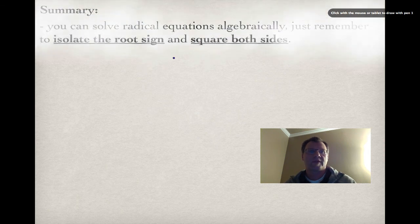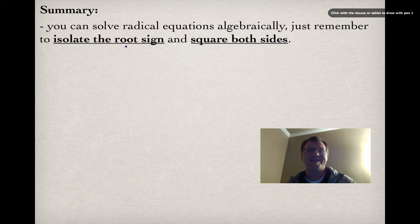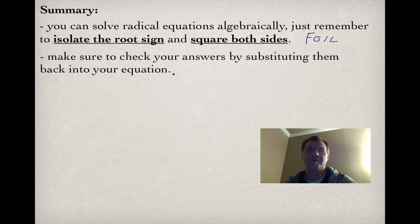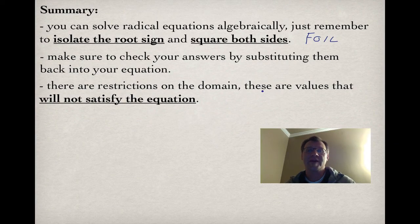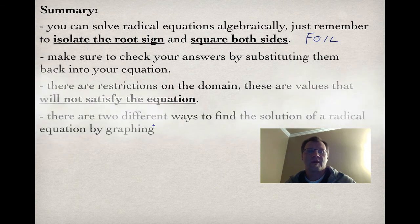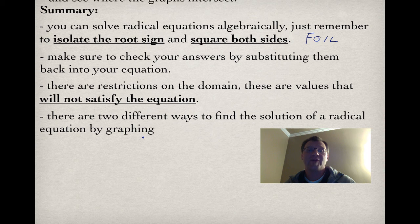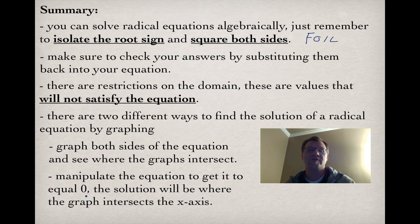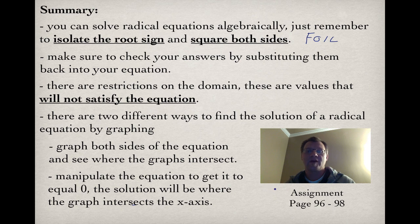In summary: you can solve radical equations algebraically by isolating the root sign and squaring both sides — if it's a binomial, remember to use FOIL. Always check your answers by substituting back into the original equation. Domain restrictions are values that produce a negative under the root sign, which we can't evaluate. There are two graphical methods: graph both sides and find the intersection, or move everything to one side, set equal to 0, and find where the graph crosses the x-axis. Your assignment is on pages 96 to 98. Good luck!